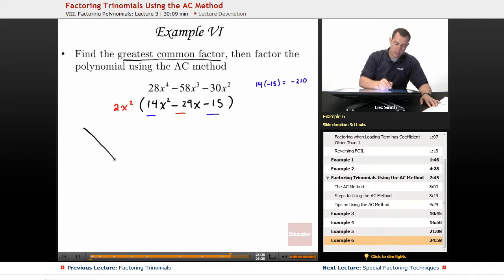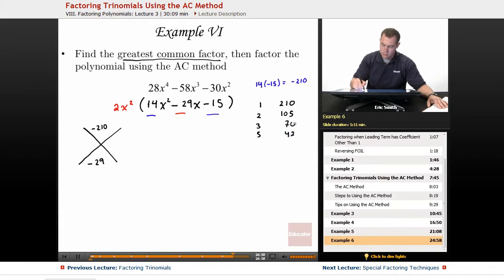Let's draw our box and really start hunting down some possibilities. So I have negative 210, must add to be a negative 29. We want to make this easy on ourselves, or at least as easy as possible. So I'm writing down possibilities that will multiply to be 210. 1, 210, 2, 105, 3 and 70, 5 and 42, 6 and 35, 7 and 30, 10 and 21, 14 and 15.